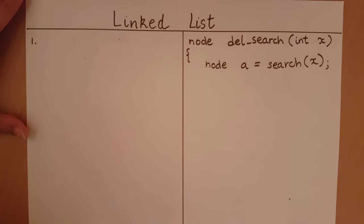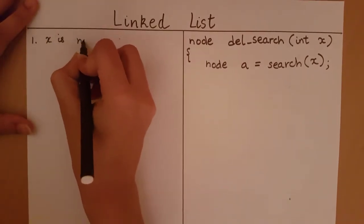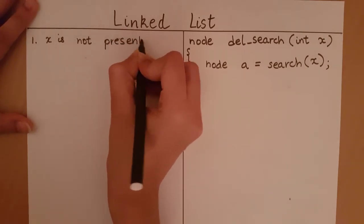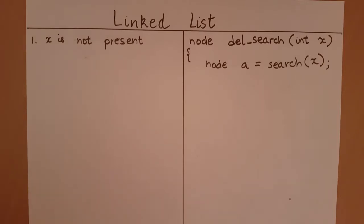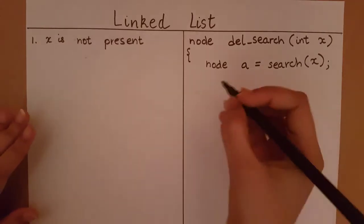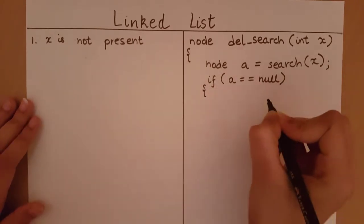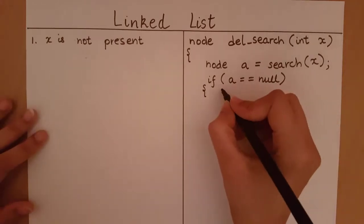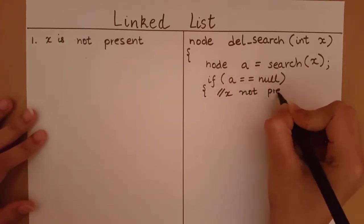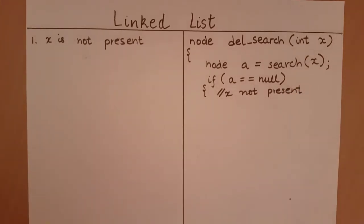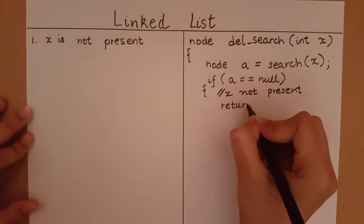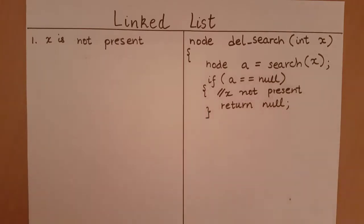The first case we can encounter is when x is not present. We have told our function to delete element x but we can't find x in the linked list, so we want to stop executing and return. If a is null, this means x is not found. I will return null, because I cannot find the node I wish to delete.